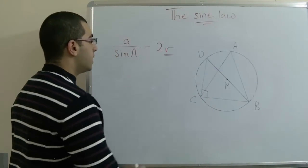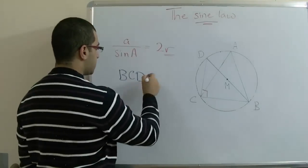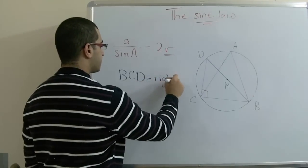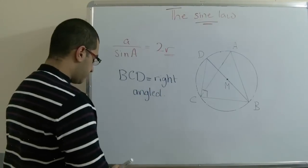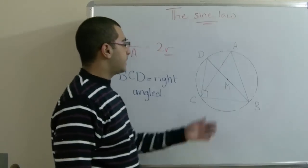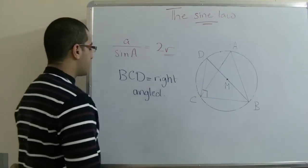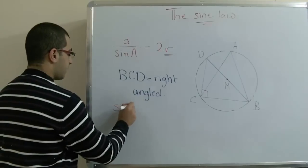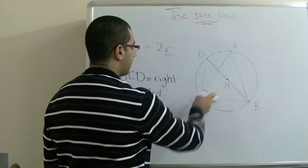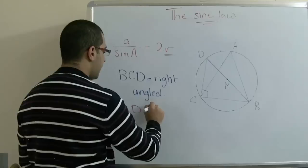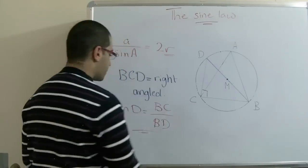We can deduce from this that triangle BCD is a right angle triangle. So, if we want to get the sine of angle D, since this is a right angle triangle, sine D equals the opposite over the hypotenuse — that is, BC over BD. This is our first point.